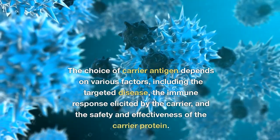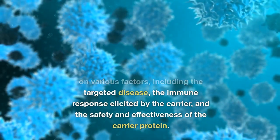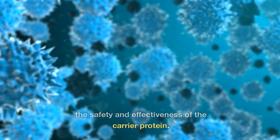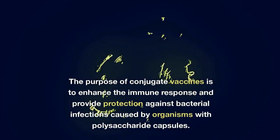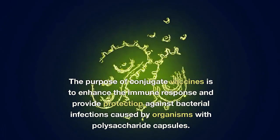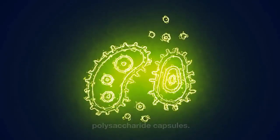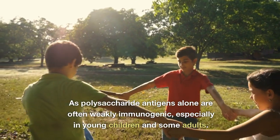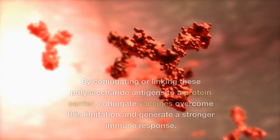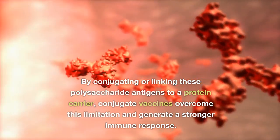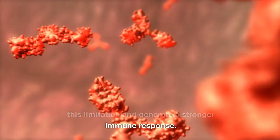The choice of carrier antigen depends on various factors, including the targeted disease, the immune response elicited by the carrier, and the safety and effectiveness of the carrier protein. The purpose of conjugate vaccines is to enhance the immune response and provide protection against bacterial infections caused by organisms with polysaccharide capsules, as polysaccharide antigens alone are often weakly immunogenic, especially in young children and some adults. By conjugating or linking these polysaccharide antigens to a protein carrier, conjugate vaccines overcome this limitation and generate a stronger immune response.